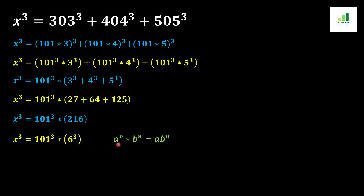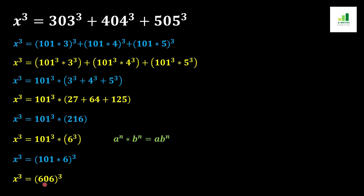From the basic rule of algebra, if two different bases have the same power, they can be written in one bracket with one power. Both 101³ and 6³ have different bases but the same power, so they combine into (101×6)³ = 606³. Therefore x³ = 606³.